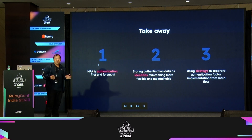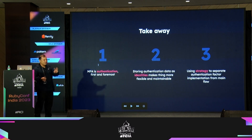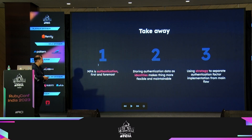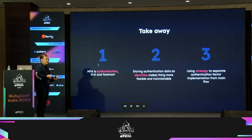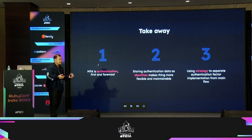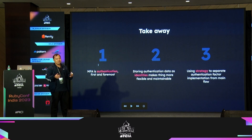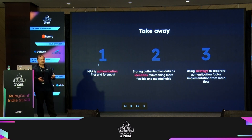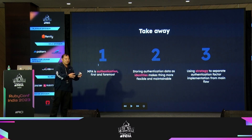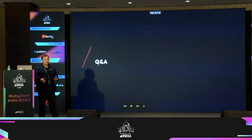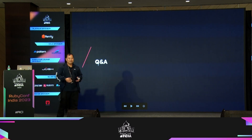There are a lot of things covered, but hopefully there are two key takeaways. First, multi-factor authentication is basically just authentication, so you can model it the same way to make it easier to extend and expand. Second, storing credentials and user information in an identity table helps make authentication more flexible. And lastly, defining a main flow for your app and adding separate strategies for distinct verification methods will make maintainability much easier.